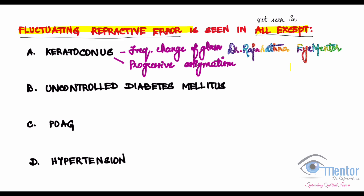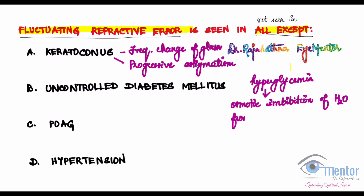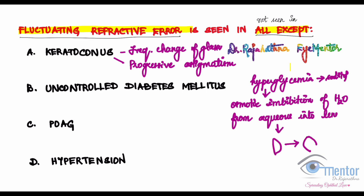Uncontrolled diabetes mellitus — when you have uncontrolled diabetes, your hyperglycemia results in osmotic imbibition of fluid from the aqueous into the lens. Why? Because there is going to be a lot of sorbitol in the lens, since there is a lot of glucose in the lens getting converted into sorbitol. That results in osmotic imbibition of water, so the lens becomes more curved.